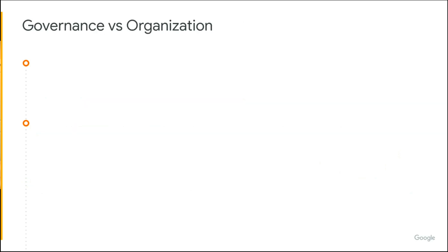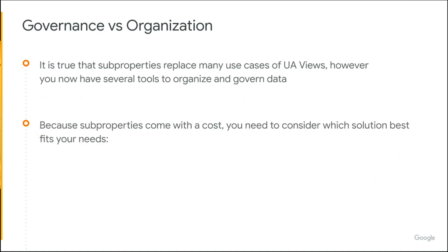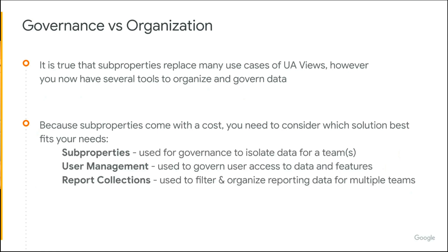I wanted to go over the difference between governance and organization. It is true that sub-properties were created to replace some of the features from Universal Analytics views. However, they are not here to replace all of the features of views. You'll see some of the settings that used to reside in a Universal Analytics view now just reside at the property level. You're also going to find that there's a cost associated with sub-properties, so you're not going to want to use them one-to-one in every situation. When you are considering how to organize and govern your data, you're going to want to look at a host of tools instead of just one.